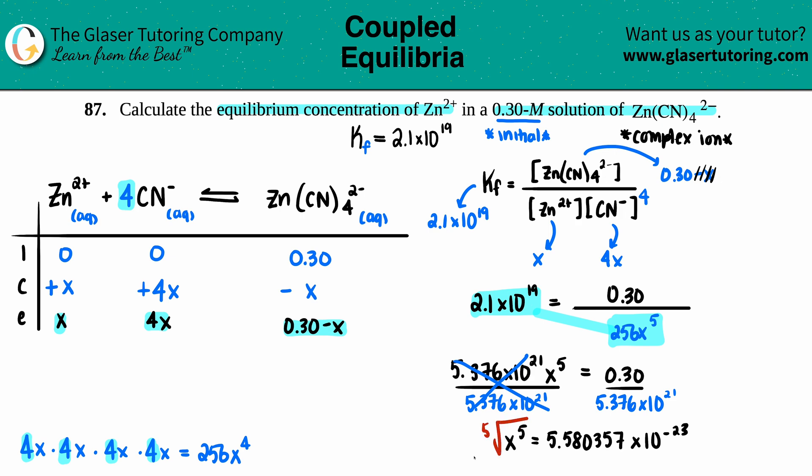Since it's being raised to the 5th, I would have to do the 5th root. However, on the calculator I have no idea how to do this, so I always raise my exponents to the inverse number. If this is 5 over 1, I could raise it to the 1 over 5, and 5 times 1 over 5 cancels out. If you do that on one side, you do it on the other. So 5.580357 times 10 to the negative 23rd raised to the 1/5th gives my x value: 3.5 times 10 to the negative 5th molarity.